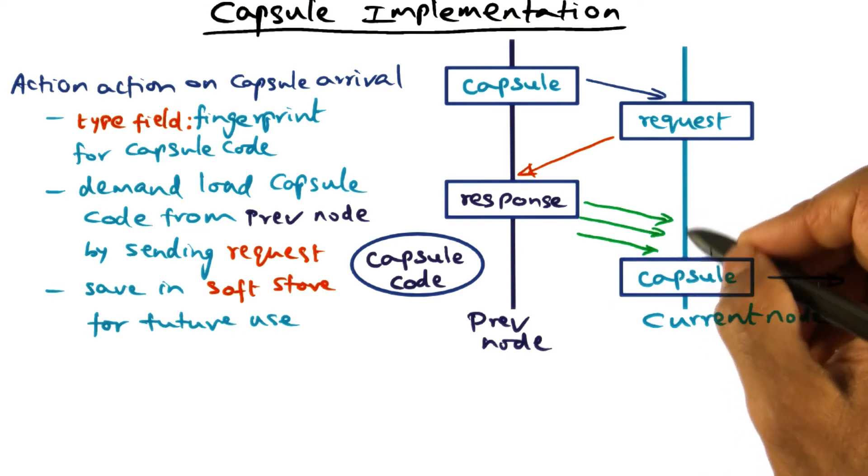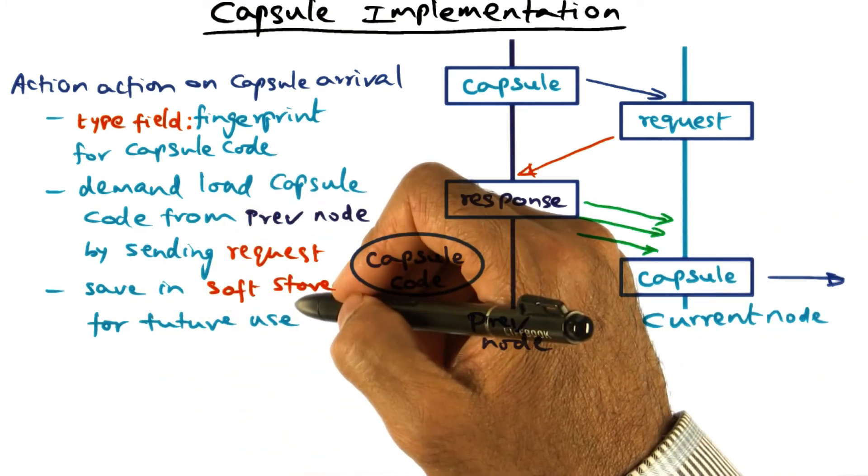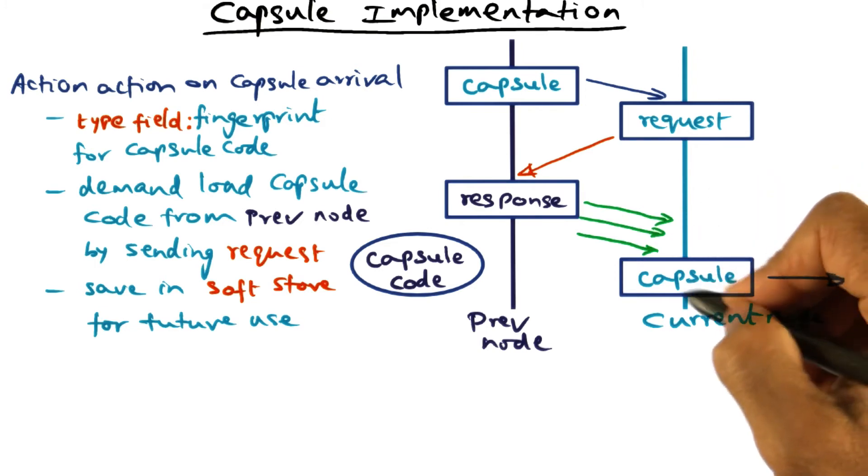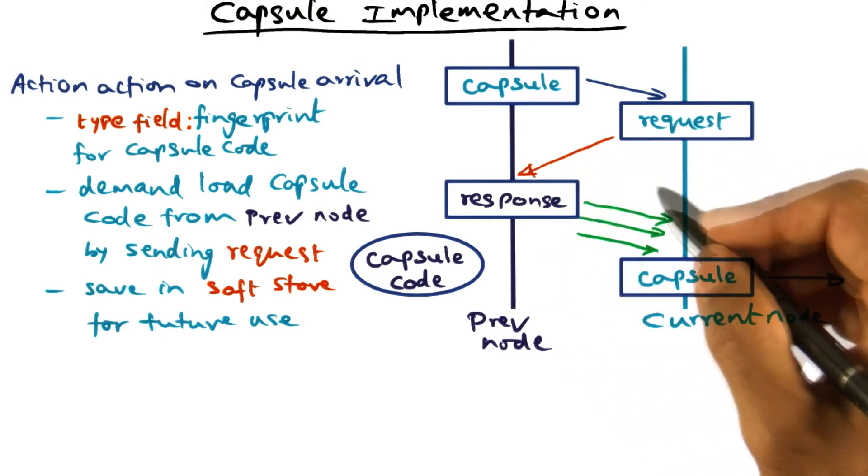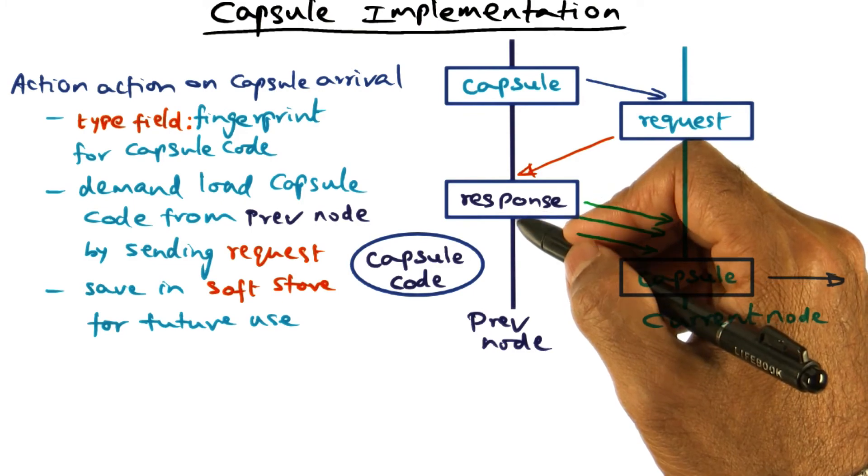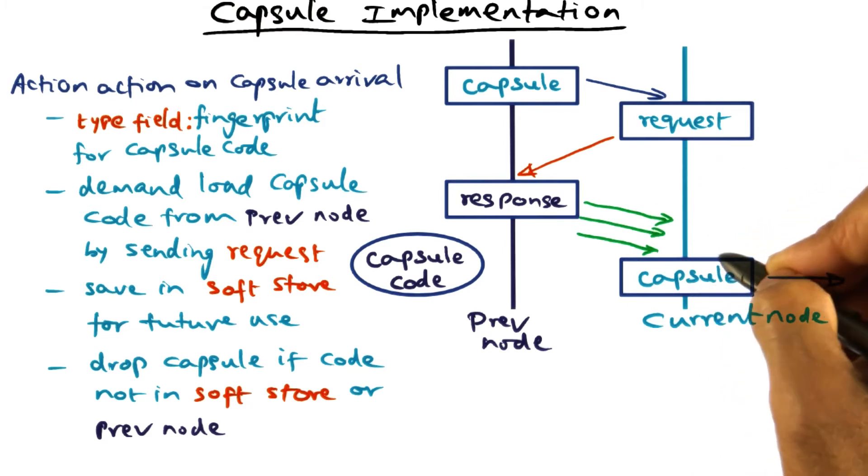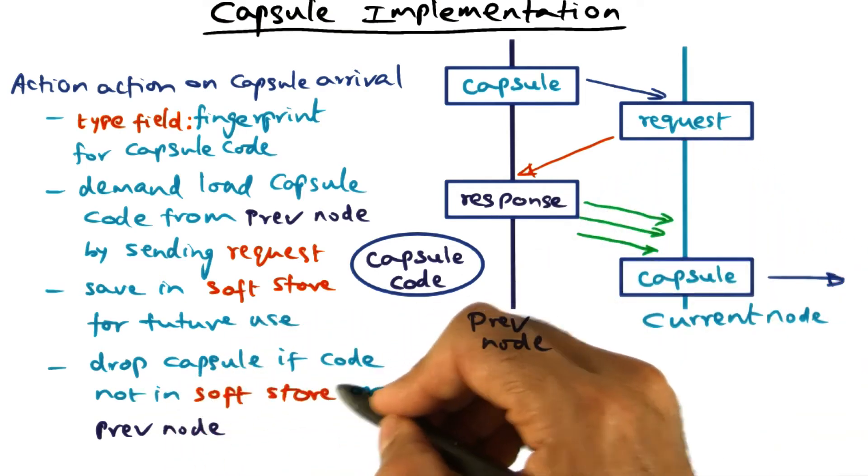And as I mentioned already, once I get this code, because I'm going to most likely see capsules of this type in the future as part of this particular network flow, I'm going to save the code in the soft store for future use. So when a capsule arrives at a node, one of two things will happen. One is, I'm going to reach into my soft store and see if I have the code that matches this particular type in the capsule. If it isn't, then I don't have the code, I'm going to reach back and get it from the previous node. But what if I go back to the previous node, and the previous node does not have the code that corresponds to this type? So the action of a node, when it cannot find the code that corresponds to a type, either locally in this soft store or retrieve it from the previous node, is to simply drop the capsule.